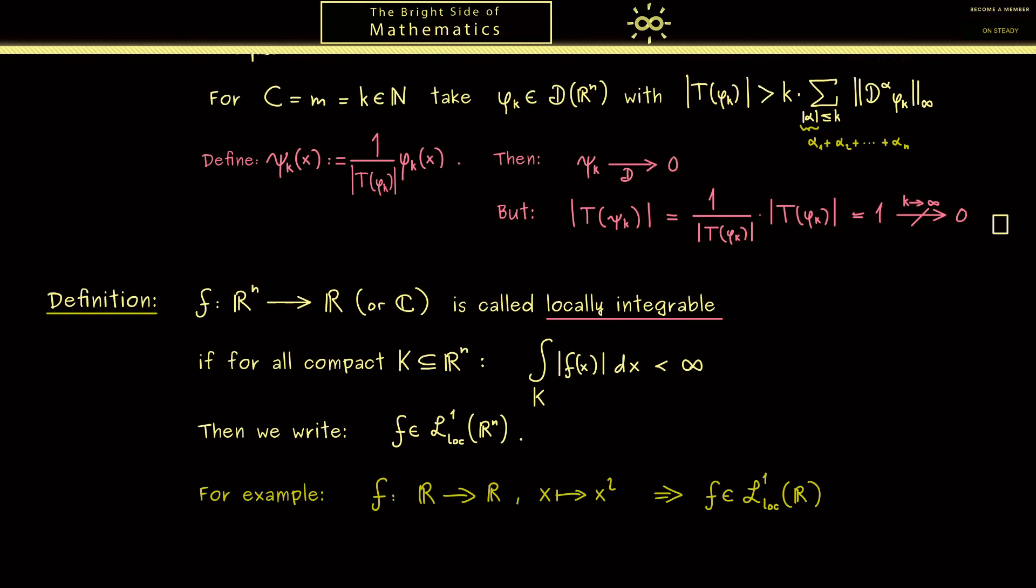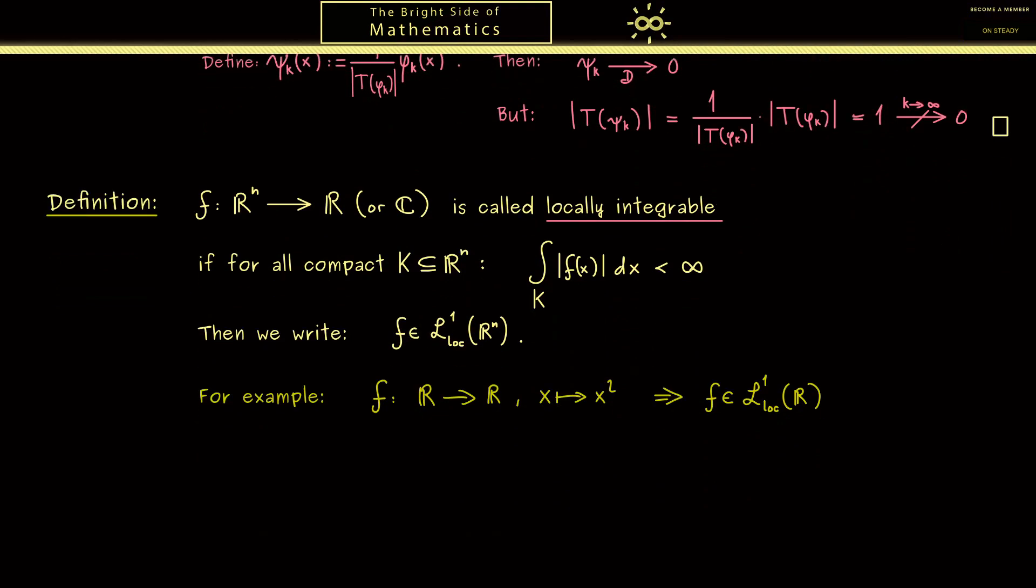Now the nice thing we want to do with such a function is to define a distribution. For such a function f I want to use the notation T_f for the corresponding distribution. And it is defined for a test function phi, and you might already know this because we did it for continuous functions in the last video, by the integral f times phi dx. This is a well-defined distribution because the integral is actually just an integral over a compact set, namely the support of phi. It is also linear and it fulfills our estimate from the beginning. This one we really should write down.